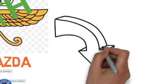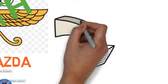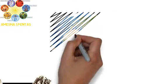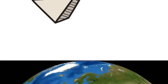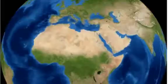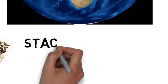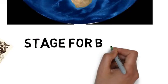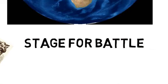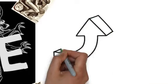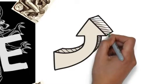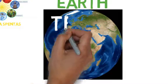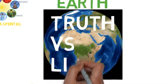Ahura Mazda wanted to defeat the lie and bring only truth into the Universe. And so he created a world. The world was to become the stage into which Ahura Mazda wanted to draw Ahiman to begin the battle between the truth and the lie.